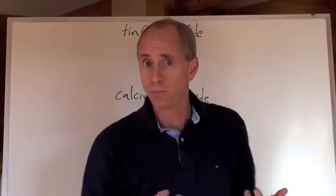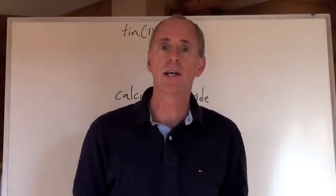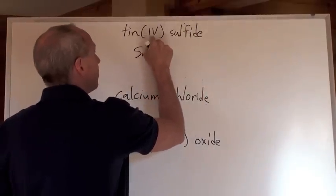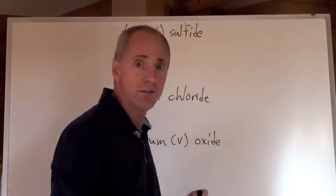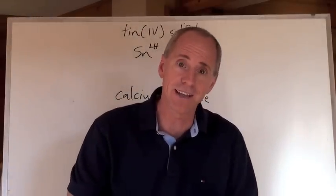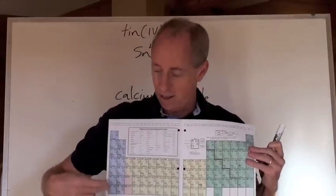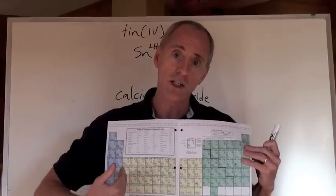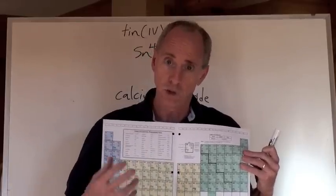If you're asked to put together the formula from the name tin(IV) sulfide, you go to your periodic table and check the charge of tin. Or do you have to? If you know tin is Sn and you're told it's an IV, which is Roman numeral for 4, that's tin 4+ right there. You don't even have to look it up. Sulfide you might—it's in group 16 or group 6A, and all of those have a 2- charge.